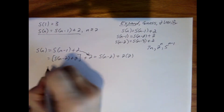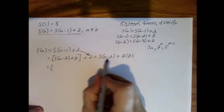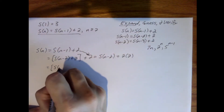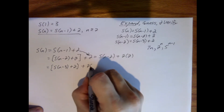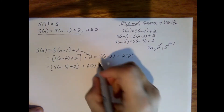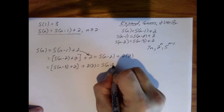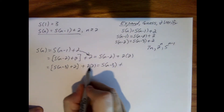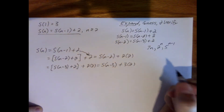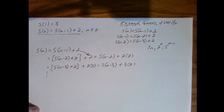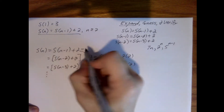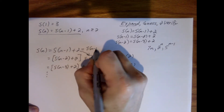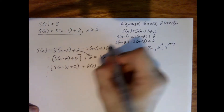Let's do this again. Now I'm going to replace s of n minus 2 with s of n minus 3 plus 2, plus the 2 times 2 we already had. Simplifying, that becomes s of n minus 3 plus three 2s. I think I'm ready to recognize a pattern: here I've got a 3 and a 3, a 2 and a 2. And looking back at the first step, I could say that was s of n minus 1 plus 1 times 2, so there's a 1 and a 1.